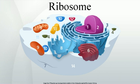A ribosome is made from complexes of RNAs and proteins and is therefore a ribonucleoprotein. Each ribosome is divided into two subunits: a smaller subunit which binds to the mRNA pattern, and a larger subunit which binds to the tRNA and the amino acids.